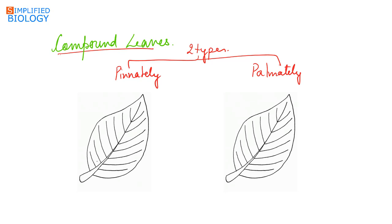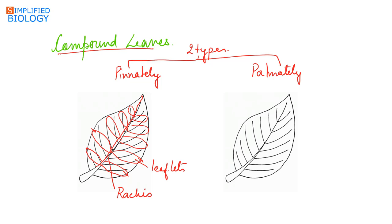In pinnately compound leaves, the incision develops from the leaf margin and reaches the midrib, breaking the lamina into leaflets. The midrib in this case is referred to as the rachis. In palmately compound leaves, the incision develops from the leaf apex and reaches the base of the lamina. There is no rachis as found in pinnately compound leaves.